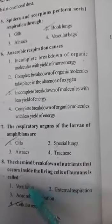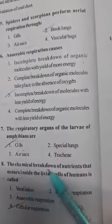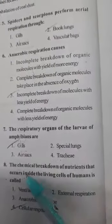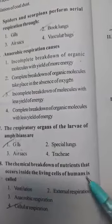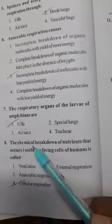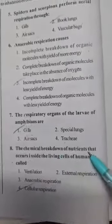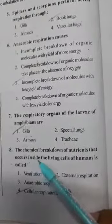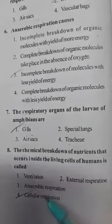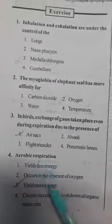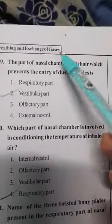The chemical breakdown of nutrients that occurs inside the living cells of human beings is called cellular respiration. Cellular respiration is of two types: aerobic respiration and anaerobic respiration.